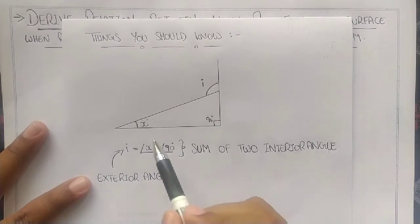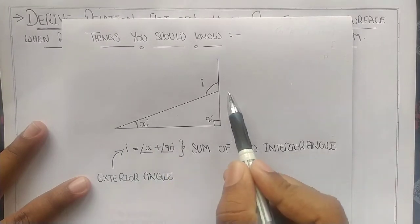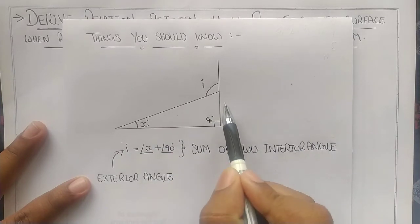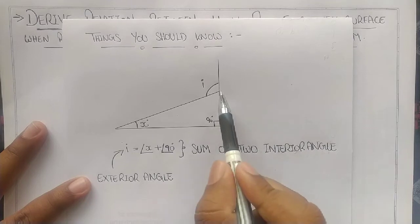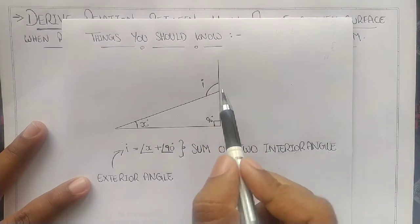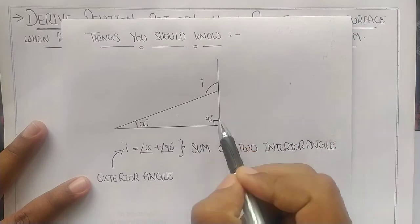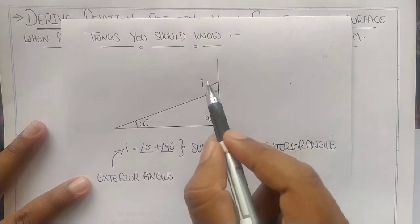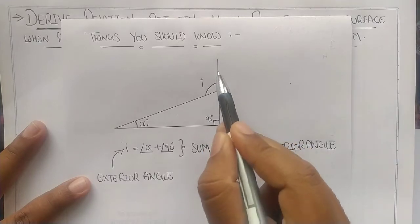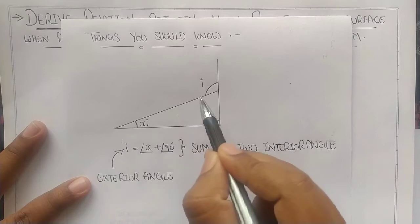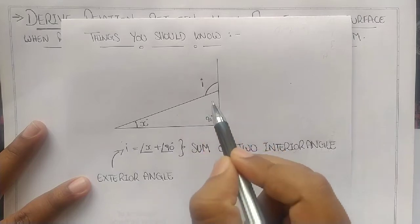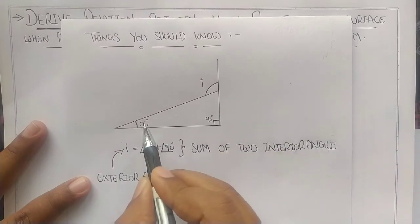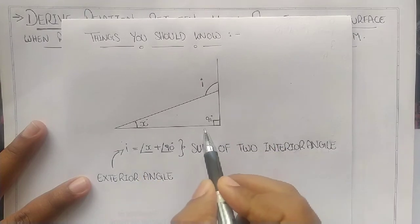Things you should know before deriving: consider any triangle. Here I have considered this particular triangle. In this triangle, the vertical side is extended beyond the triangle. The extended line and this line make an angle I, which is the exterior angle. Suppose this angle is X and this angle may be Y.